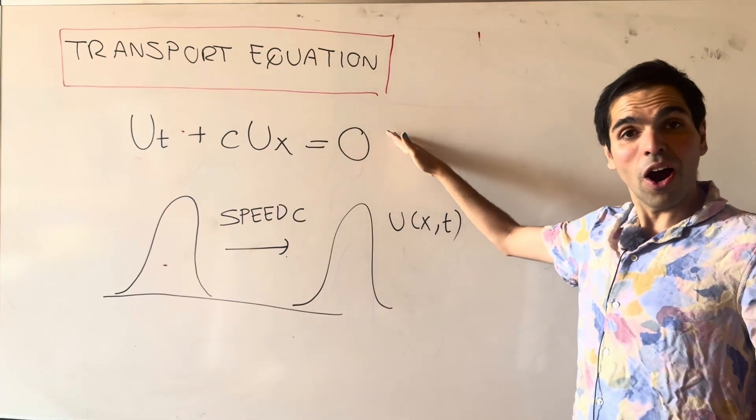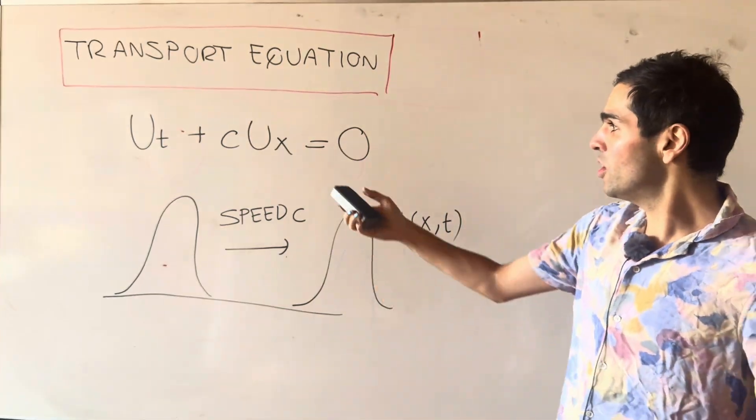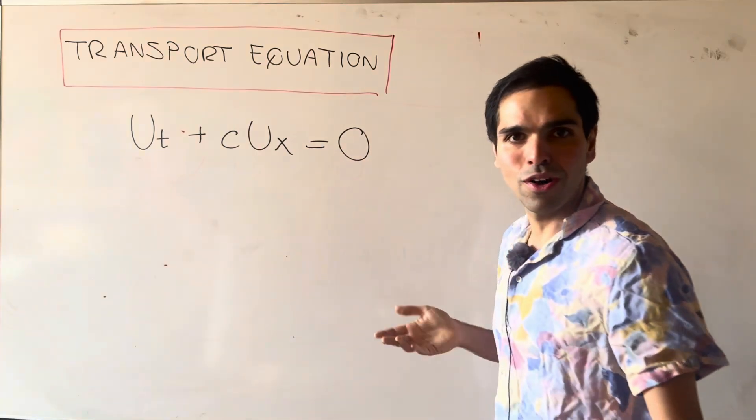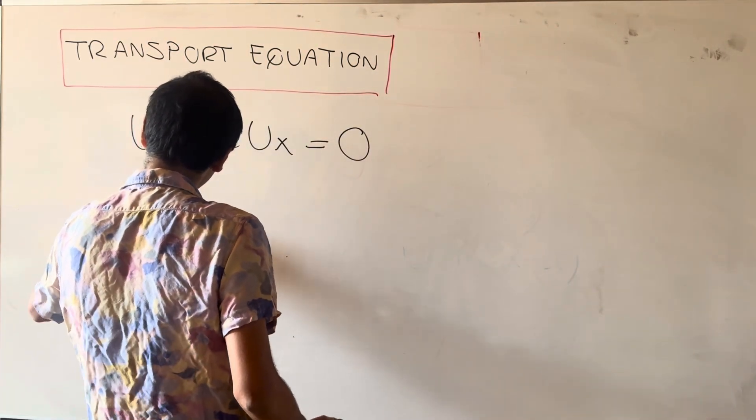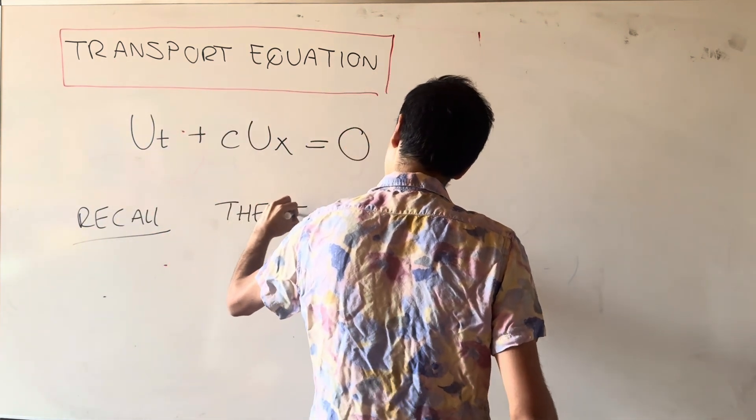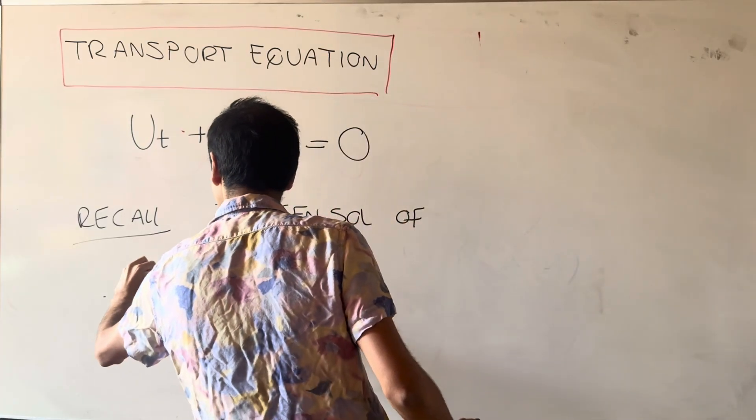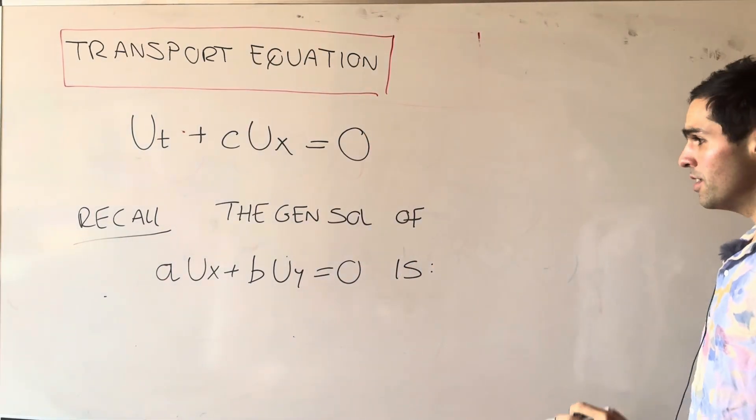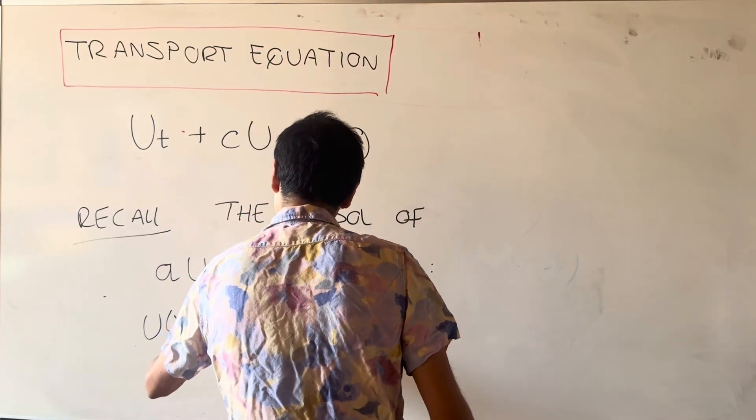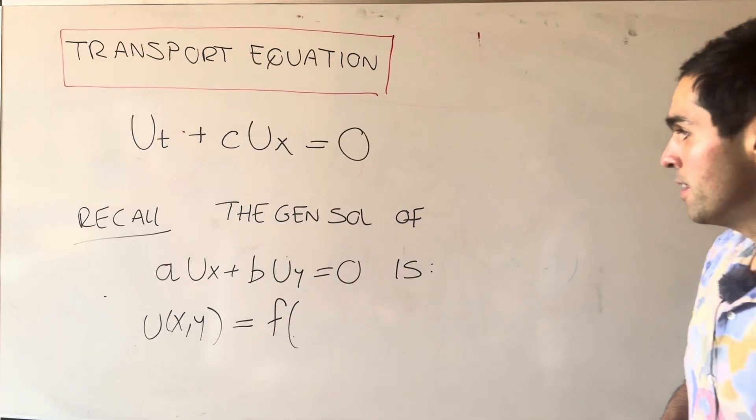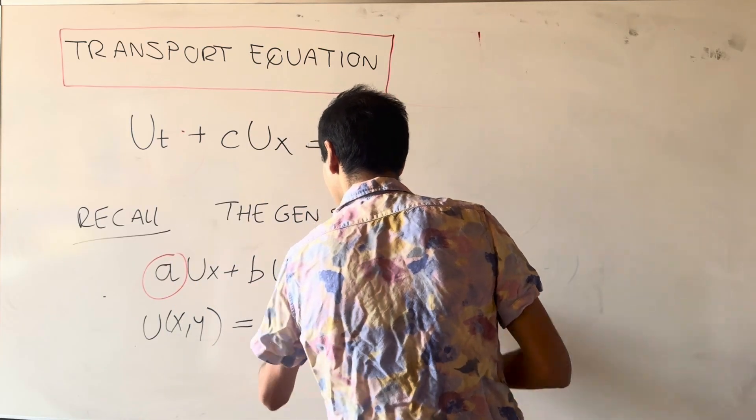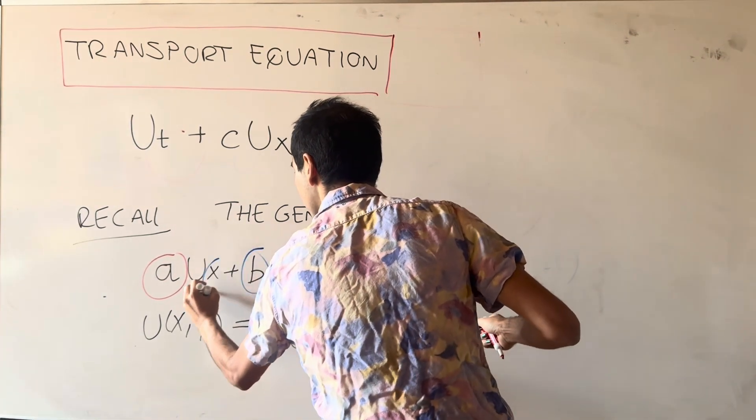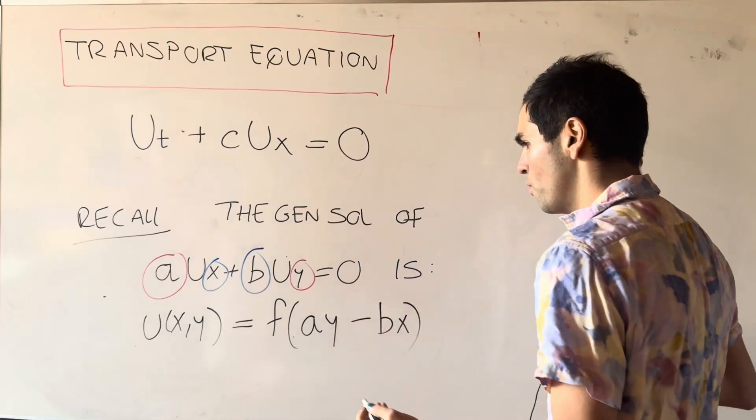Now, the cool thing is we already know everything we need to know to solve this, because notice it is a constant coefficient first order PDE. So recall the general solution of a ux plus b uy equals 0 is simply u of xy is any function of the cross term, so ay minus bx, which are the inner terms, where again f is arbitrary.